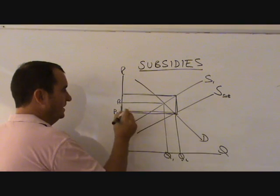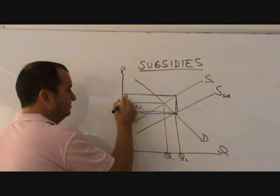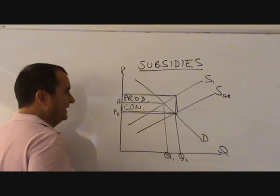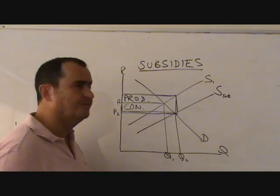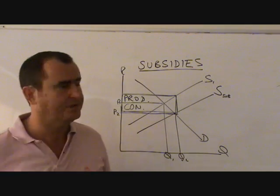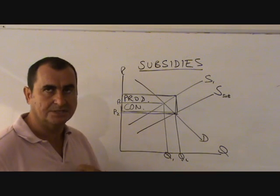So we can show that here by saying that this is what the consumers feel, and this is what the producers keep. And as you can see, in this case, it's a pretty even split. It depends upon the elasticities of demand and supply. But that will tell us how much of the subsidy the producers can keep.